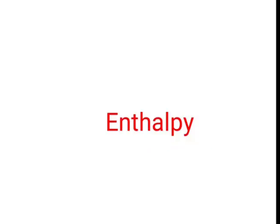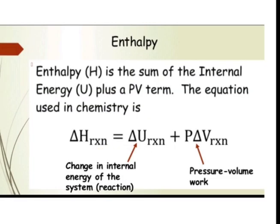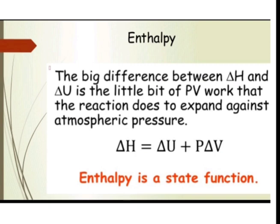The second definition today is enthalpy, denoted by capital H. Enthalpy is the sum of the internal energy U plus a pressure-volume term. The equation is: delta H of reaction equals delta U of reaction plus P times delta V, or simply H equals U plus PV. PV represents pressure-volume work, delta U is the change in internal energy, and delta H is the enthalpy of reaction. Enthalpy is a state function.